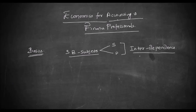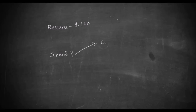Let us understand what economics is. For that, let us take a simple example. Let's say you are given a hundred dollars by your parents — that's the resource available with you. With this hundred dollars you can do whatever you want. You can use it for going to the cinema, watching a movie, going for a party, giving a party to your friends, going for an outing, or buying some books.